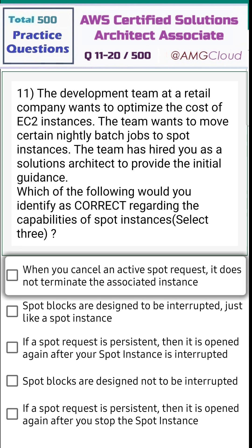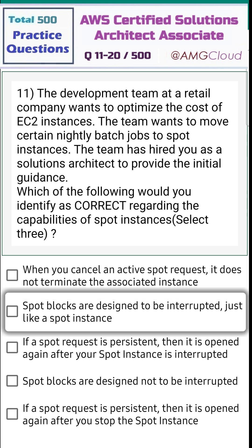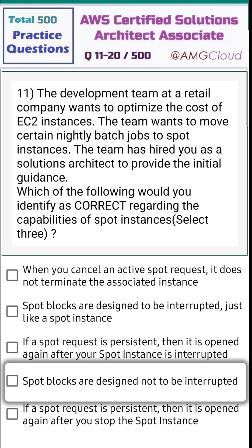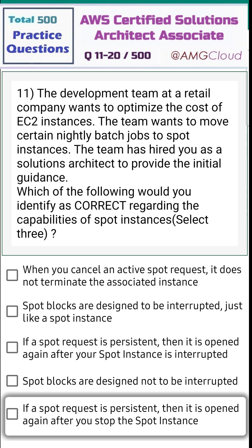First option: when you cancel an active spot request, it does not terminate the associated instance. Second option: spot blocks are designed to be interrupted just like a spot instance. Third option: if a spot request is persistent, then it is opened again after your spot instance is interrupted. Fourth option: spot blocks are designed not to be interrupted. Fifth option: if a spot request is persistent, then it is opened again after you stop the spot instance.